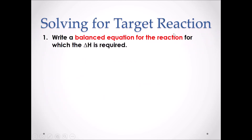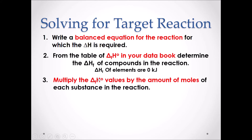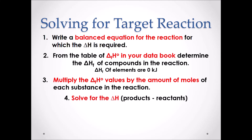To solve for the target reaction enthalpy change: Step 1 — write a balanced equation for the reaction. Step 2 — from the table in the Chemistry 30 data booklet, determine the heat of formation of each substance; remember that elements are given a value of zero kilojoules. Step 3 — multiply the enthalpy of formation of each substance by the number of moles in the equation. Finally, solve for ΔH of the target reaction — always products minus reactants.